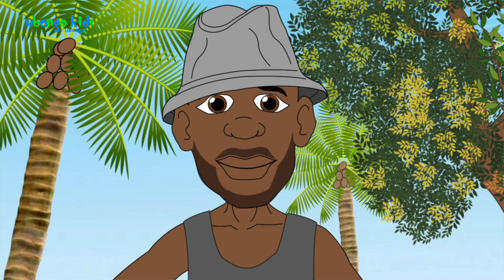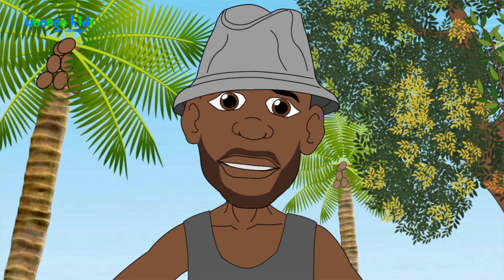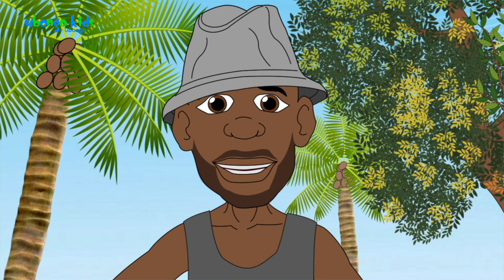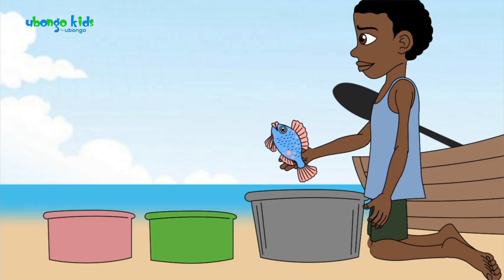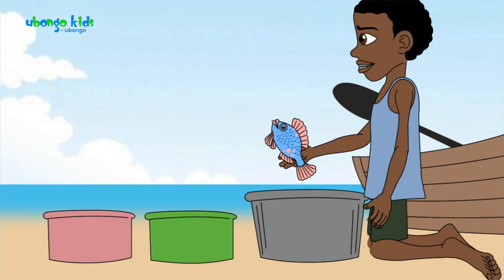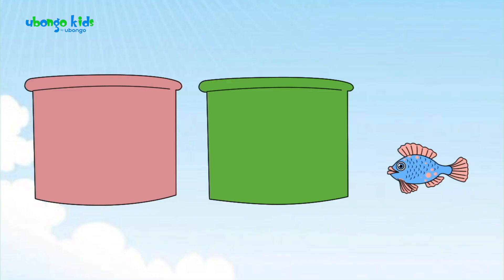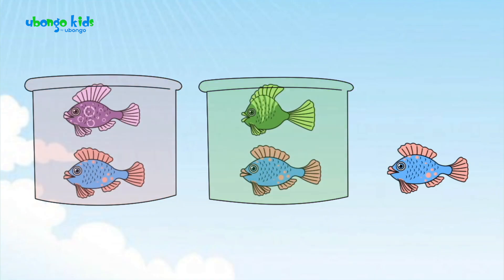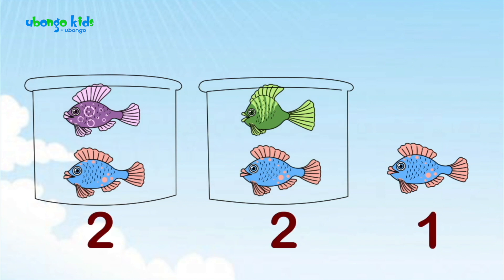How many fish does each group have? Each group has two fish, and there's one fish remaining. You said there are two groups of two fish and one remaining. So we've divided five by two, and we get two groups of two with a remainder of one.